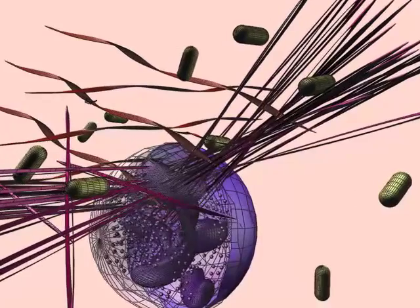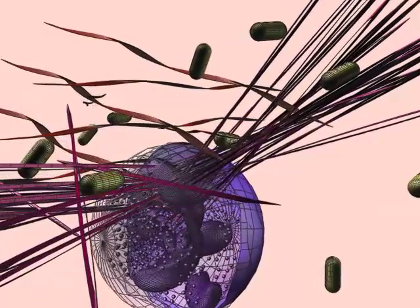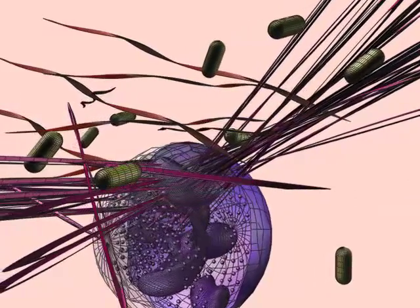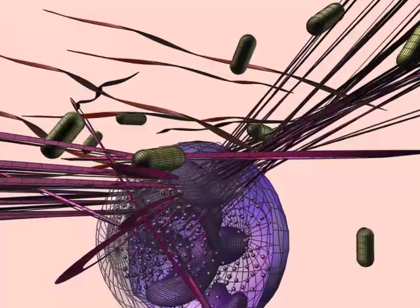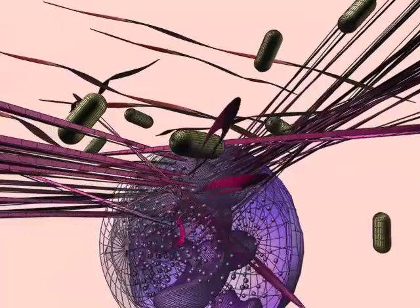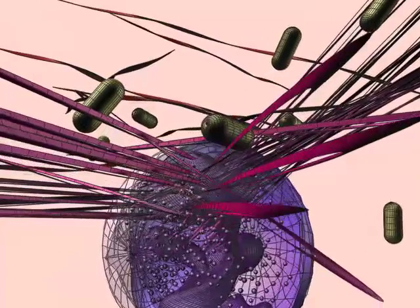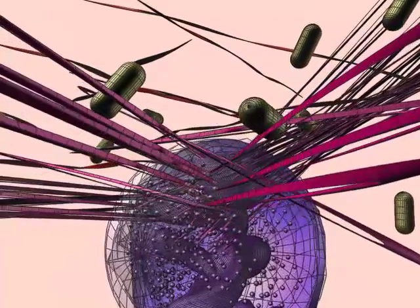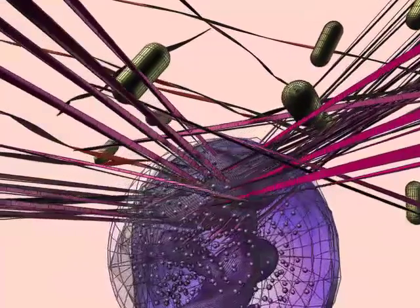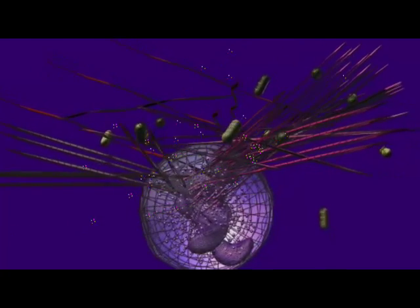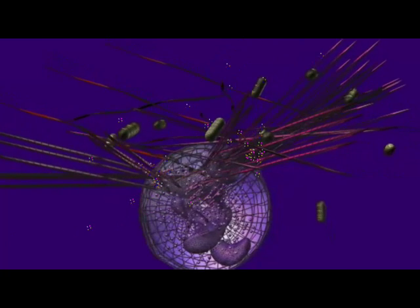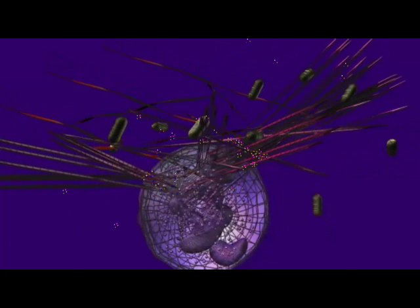Any antimicrobial chemicals released from the neutrophils would thus also be contained in this area, increasing their effect and limiting their potential negative effects on the host. And since more than two dozen of these antimicrobial compounds are known to bind to the chromatin, apparently this allows the trap itself to be toxic to microbes.